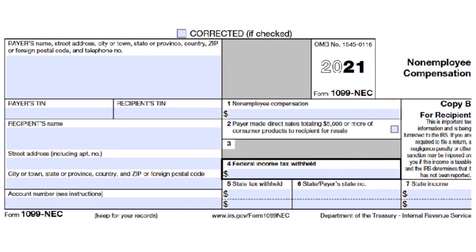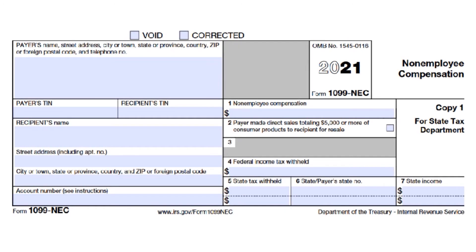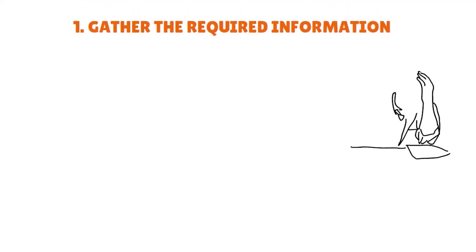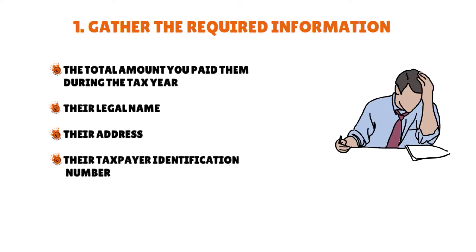We're showing you on the screen Copy B sent to the contractor and Copy 1 sent to the state tax department. Step one as a payer: gather the required information. Before you can complete and submit a 1099-NEC, you'll need the following information for each independent contractor: the total amount you paid them during the tax year, their legal name, their address, and their taxpayer identification number — likely their Social Security number.